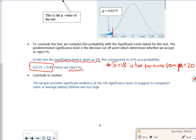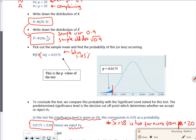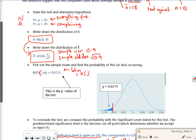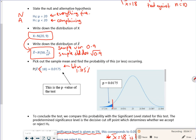So then we've got this slide, concluding in context. It says the sample provides significant evidence at the 5% significance level to suggest that the company's claim on average battery life was too high. There's a lot of information in there that you have to write in a very specific way. Now there is a mnemonic for remembering here. This layout does everything.